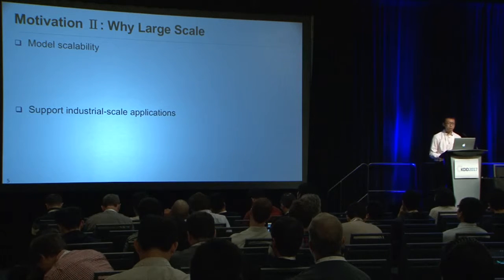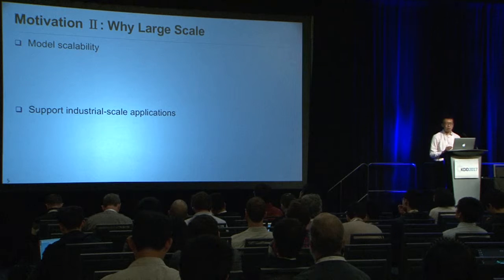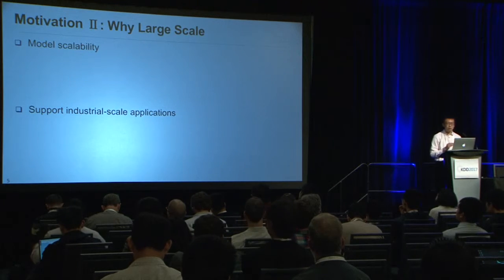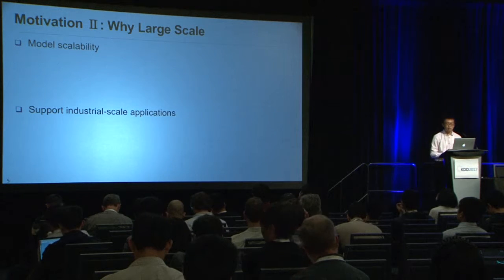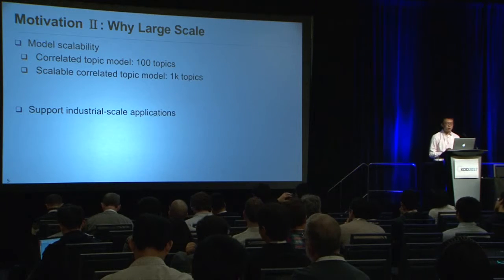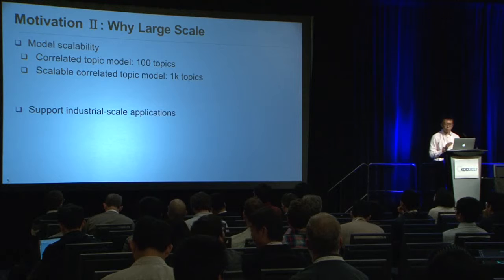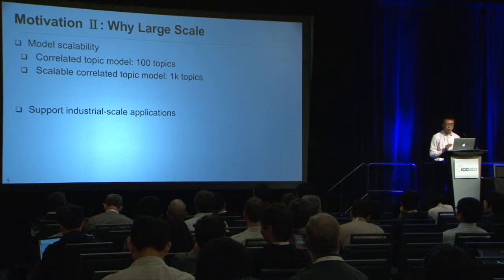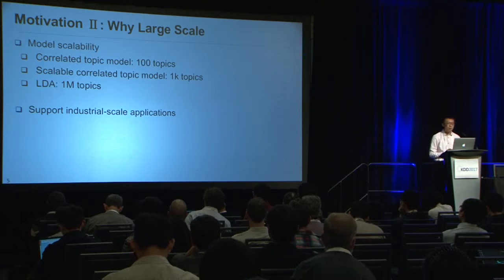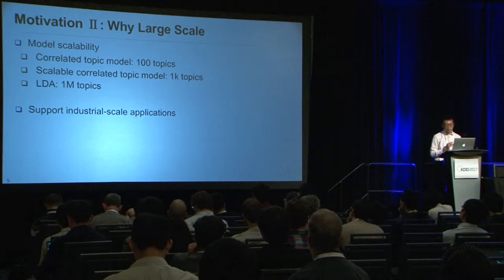Secondly, why large scale? The previous correlated topic model directly models the pairwise correlation between topics, imposing very expensive computational cost. Despite its enhanced expressiveness and richer representations, its practical applications have unfortunately been limited to hundreds of topics. Recent work on scalable correlated topic models improved modeling and inference, but is still limited to the 1,000-topic scale. Such correlation methods are far from satisfying for industry and stand in stark contrast to the recent development of LDA, which is able to handle 1 million topics. Therefore, we aim to derive a new efficient correlated topic modeling approach to support industrial-scale applications.